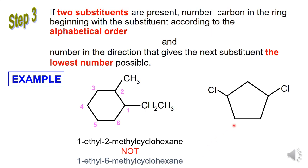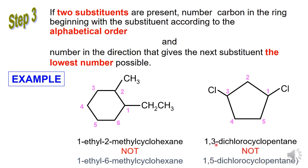Example 2: the parent name is cyclohexane. Start numbering at carbon 1 from Cl, and give the lower number to the next substituent group. So the correct IUPAC name is 1,3-dichlorocyclohexane, not 1,5-dichlorocyclohexane.